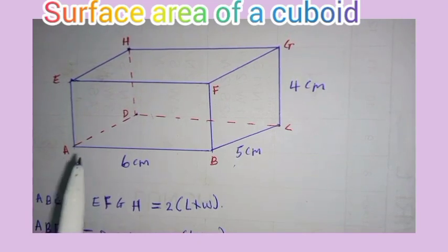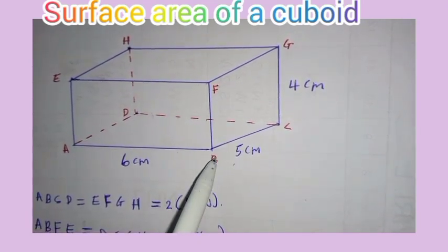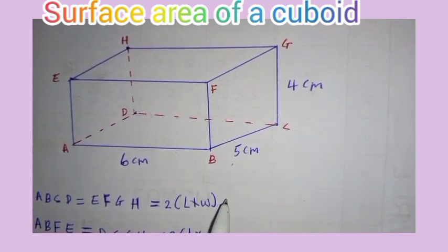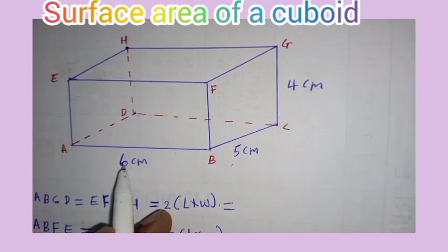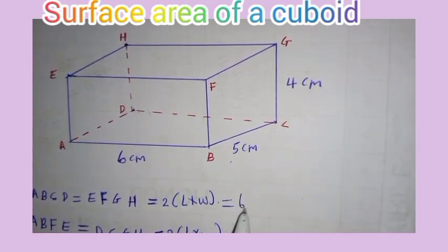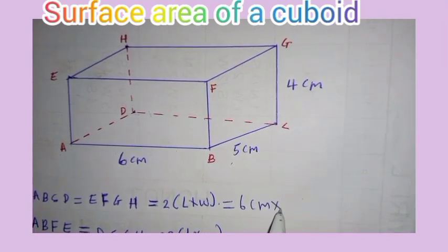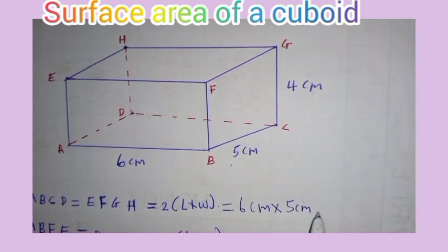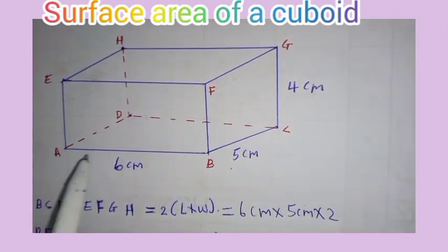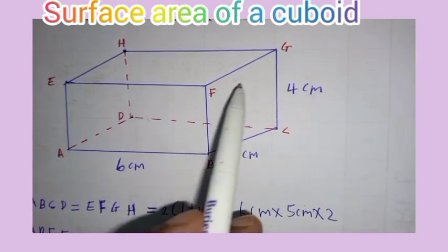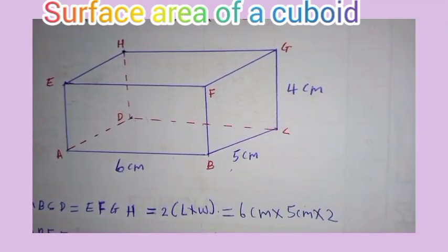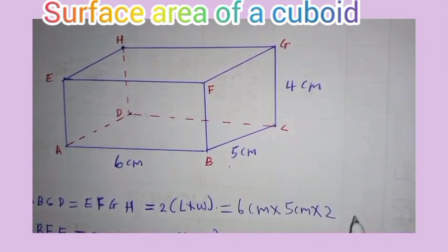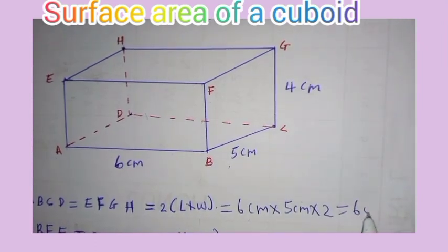So, to get the area of face ABCD, it will be given by length times width. The length of this face is 6 cm, multiplied by the width which is 5 cm, times 2 because there is this face and there is this other one. So 5 times 6 is 30, and that times 2 is 60 square cm.